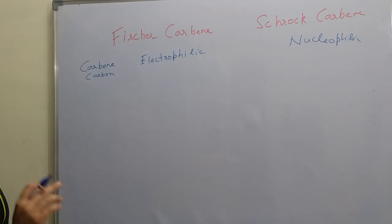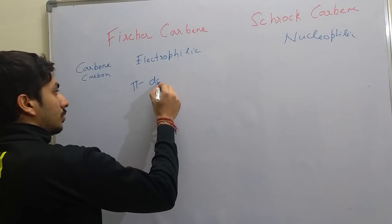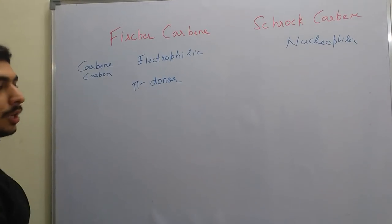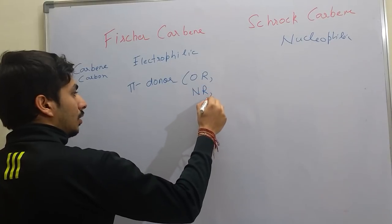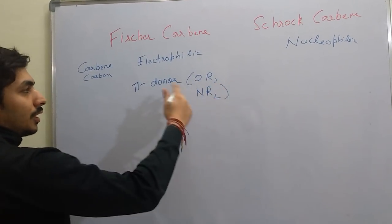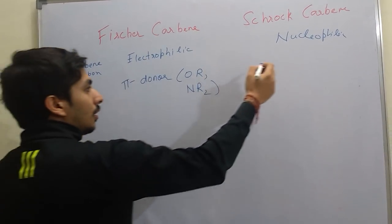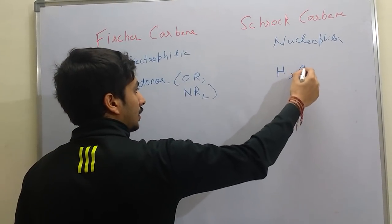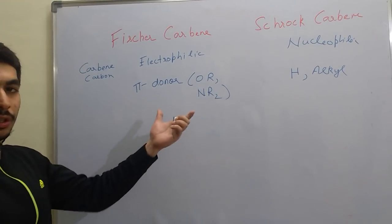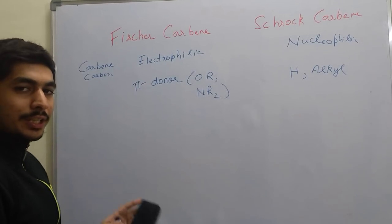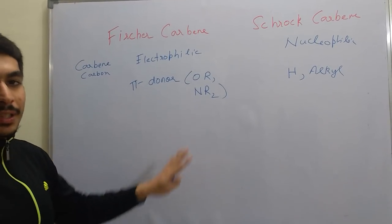The second point of difference is the substituents attached to the carbene carbon. In Fischer Carbenes, they are pi-donor substituents — the alkoxy group (OR) or amino group (NR2). For Schrock Carbenes, the substituents attached to the carbene are either hydrogen or alkyl groups like CH3. This is just a summary; I will explain each point in detail.